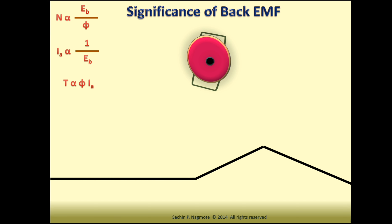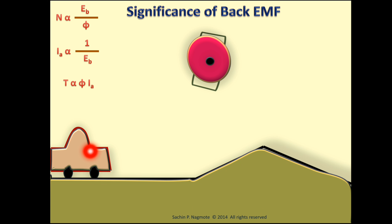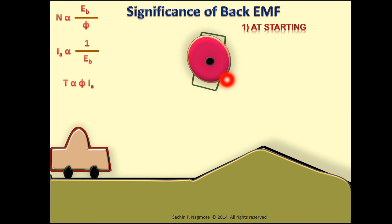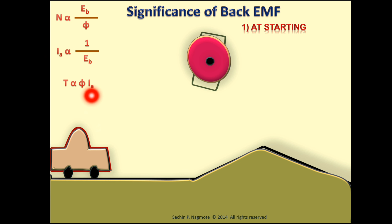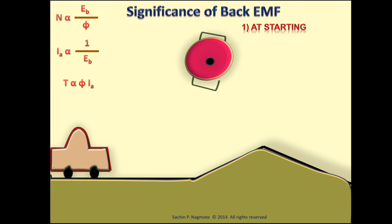Let us compare the working of this motor with driving a vehicle. At the beginning, our vehicle is at a stationary position, so we apply first gear because to accelerate from zero speed we require maximum torque, and in first gear maximum torque is available. The same thing happens here: at starting, our motor is in a stationary condition and requires very high starting torque. At starting, the speed is zero, so back EMF will be zero, and as back EMF is zero the armature current Ia will be very high. Therefore at starting, maximum armature current flows, giving maximum torque, and so the motor will rotate.